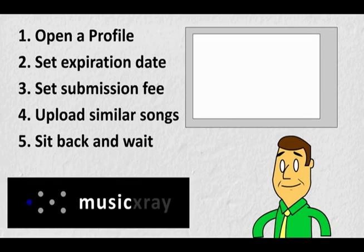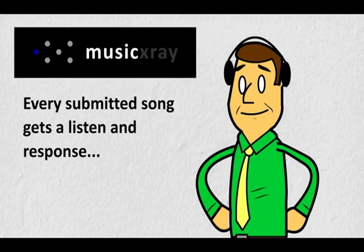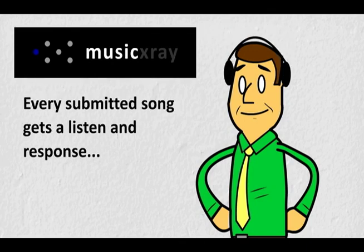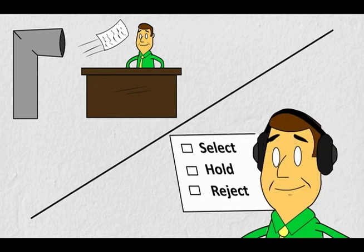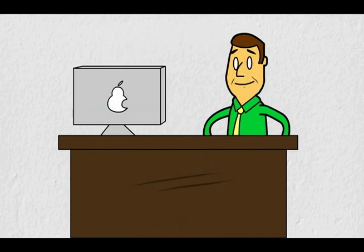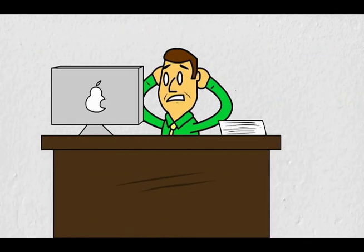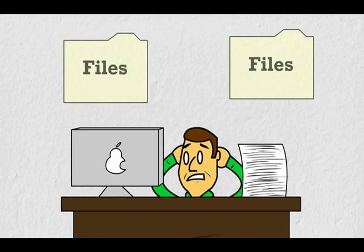Step 5: Sit back and wait to be alerted each time you receive a submission. By using Music X-Ray, you agree to attend to each and every submission you receive — that's why you have the ability, by setting a submission fee, to increase or decrease the pace. For each track, you select it for your opportunity, place it on hold, or reject it. You can easily interact with the submitter without revealing your direct contact information so you won't be pursued. You'll never lose track of who submitted which song, and we help you keep everything organized in smart folders.